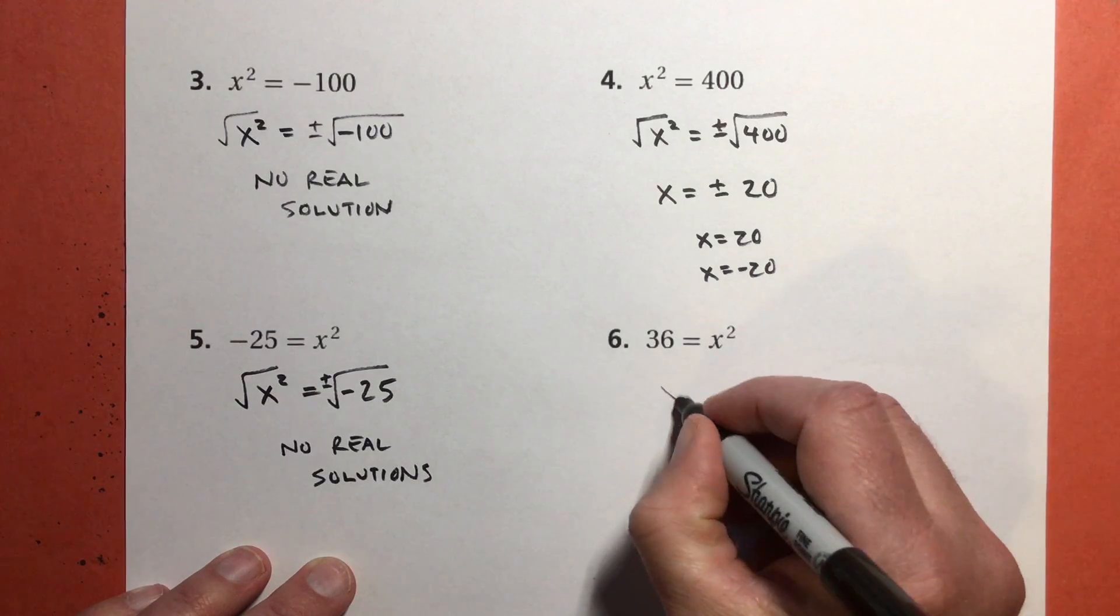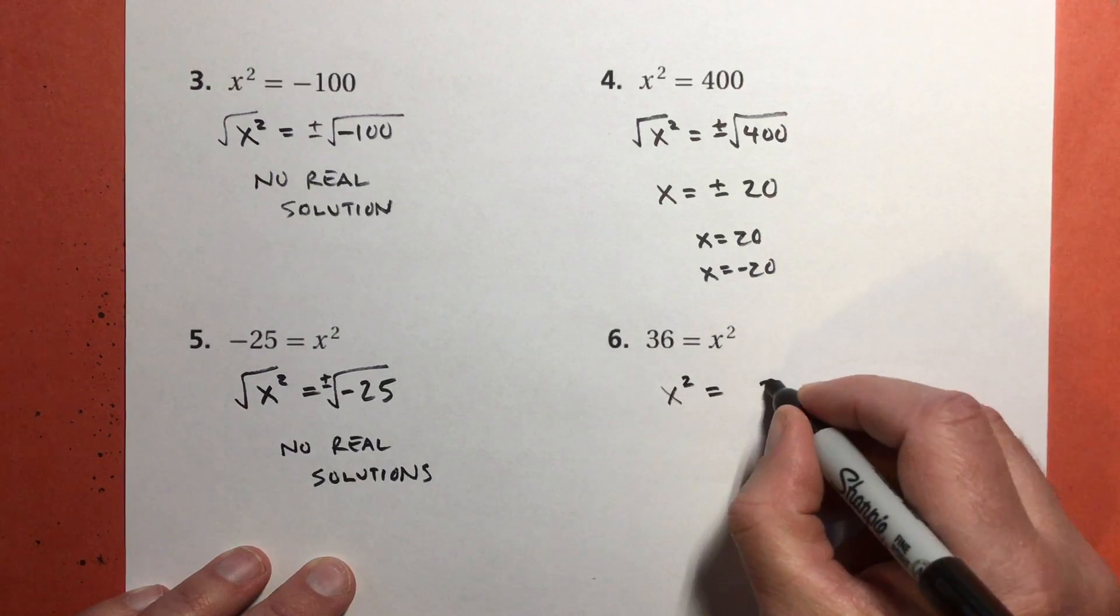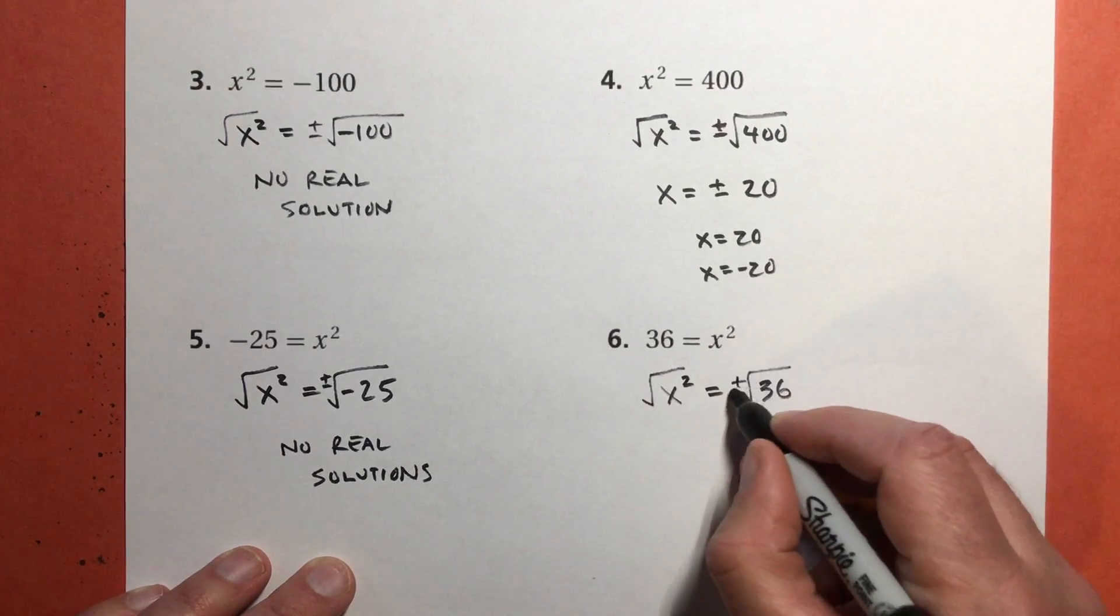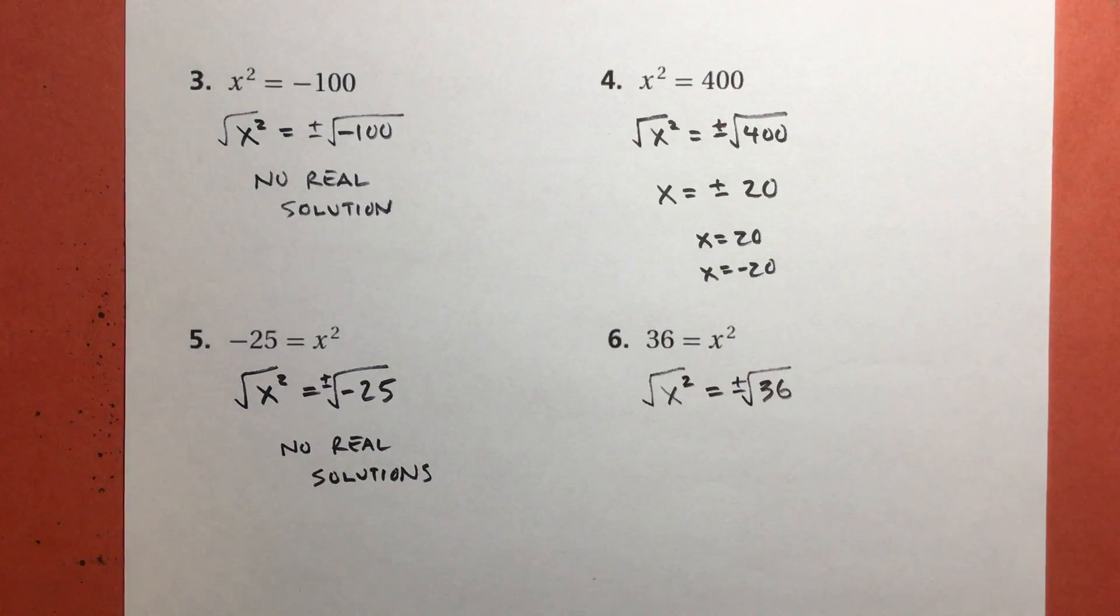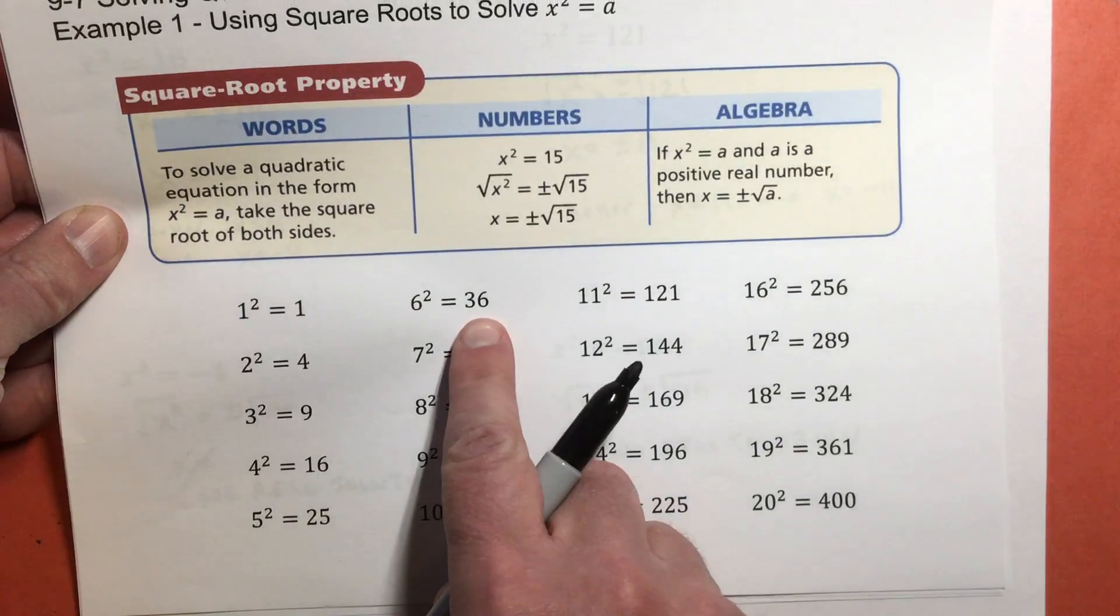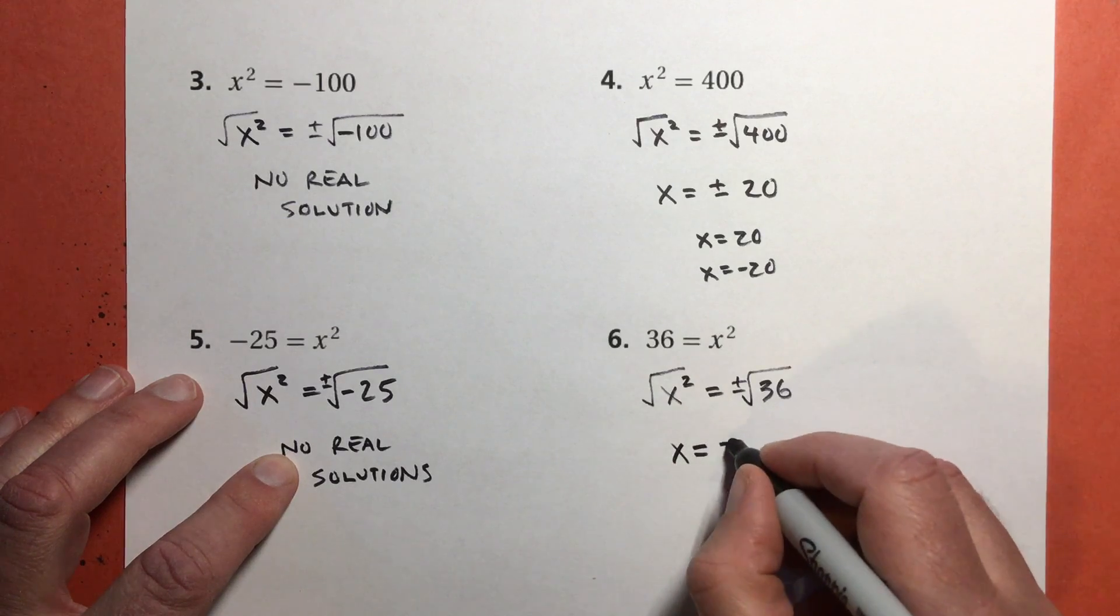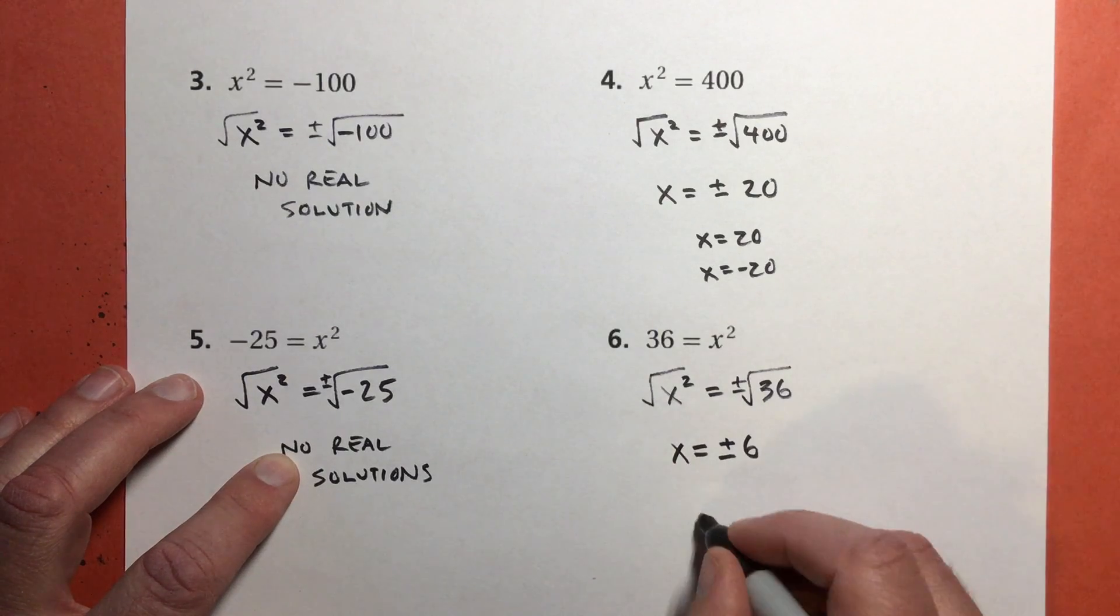Number 6. Again, I'm going to turn it around. I get x² = 36. Take the square root of both sides. And don't forget the plus or minus. Where's my 36 on my list? It's right here. So this is x = ±6.